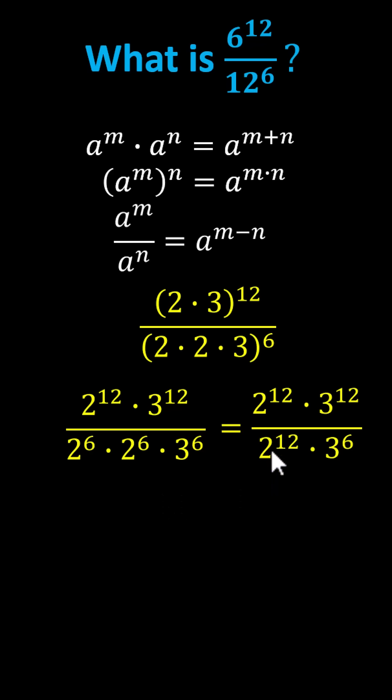For the next step, 2 to the power of 12 divided by itself simplifies to 1, and we're left with 3 to the power of 12 divided by 3 to the power of 6.